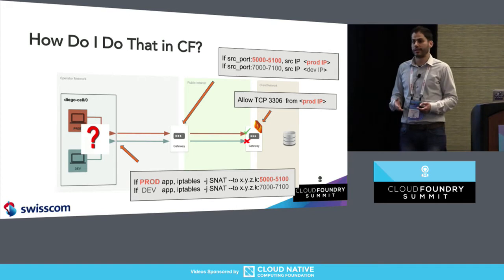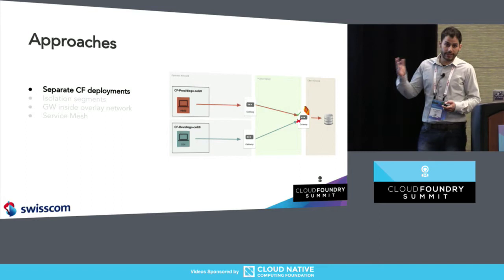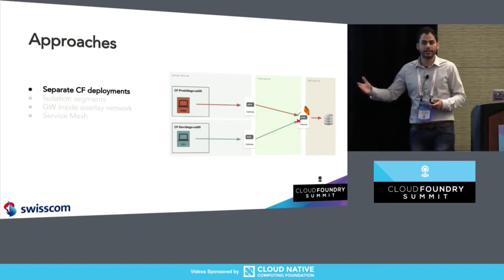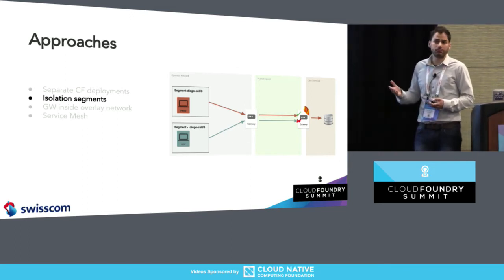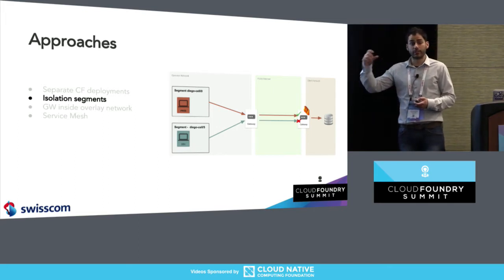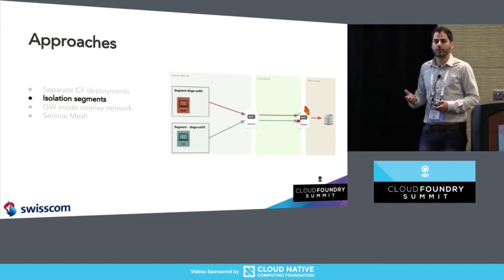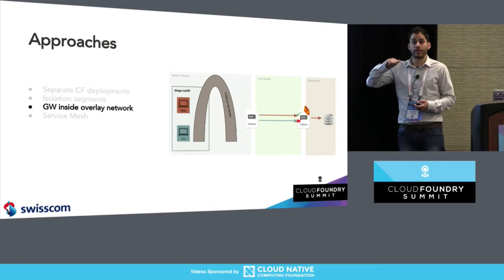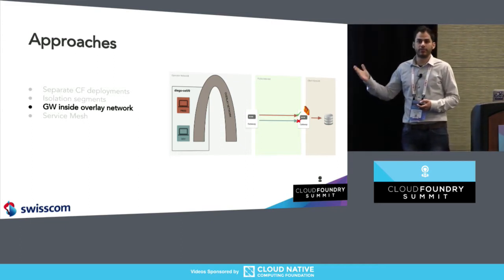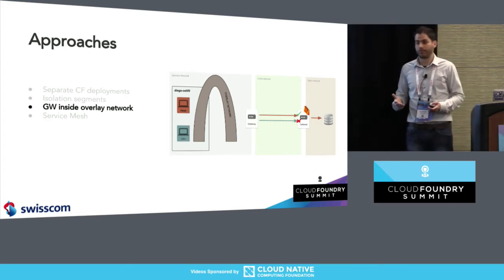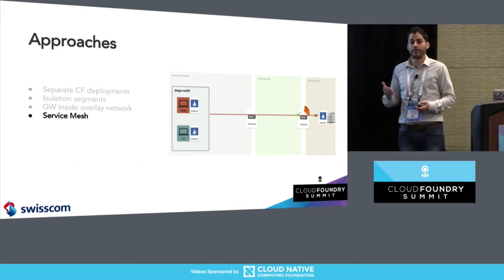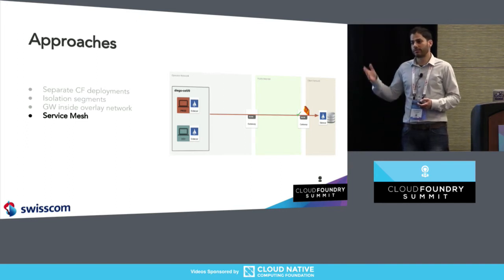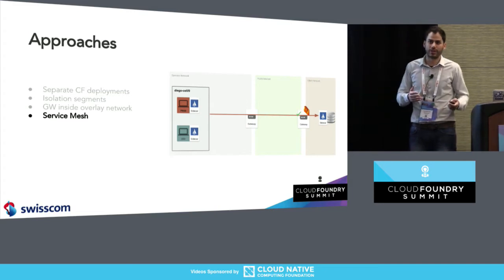The question is: how do I do that in the CF platform? Before presenting my solution, alternatives I've discussed over the last year include two separate BOSH deployments, which might make sense for a large customer. Another alternative is isolation segments — by having only a specific subset of Diego cells running the production app, we could differentiate the IP, but resource-wise it might not be optimal. From a network perspective, putting the operator gateway inside the container network is better, but given that this gateway may be an expensive hardware device, it's not very applicable. And of course there is service mesh, which will solve everything — but this assumes we open up and have our customer trust it, and it's a very simple use case to try to introduce service mesh just to solve that.